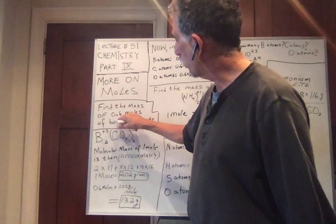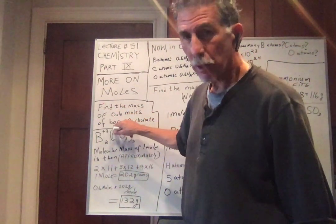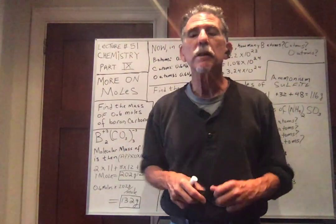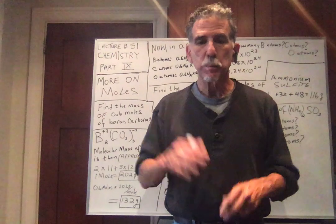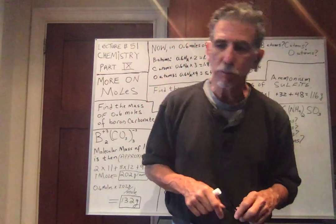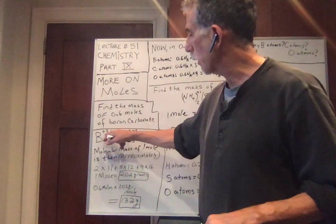More on moles. Find the mass of 0.6 moles of boron carbonate. So first we need to get the formula. Boron is in group 3A, so we know boron has an oxidation number of plus 3. It wants to give up 3 electrons.